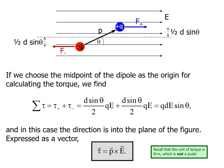To calculate the torque, we choose the midpoint of the dipole as the origin. We have taken the midpoint shown by the dotted line, and we have divided the distance. The two perpendicular components of the dipole are half d sin theta and half d sin theta. We have to calculate half of d sin theta.